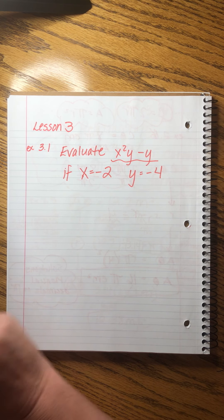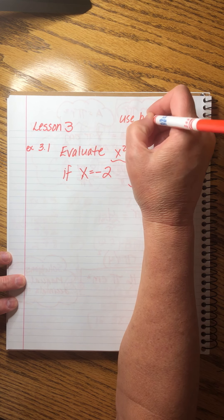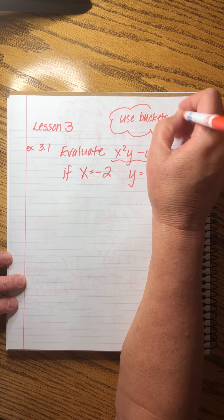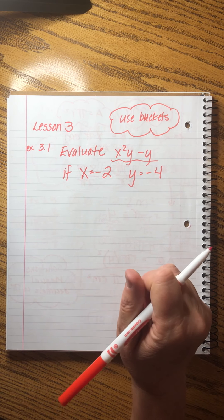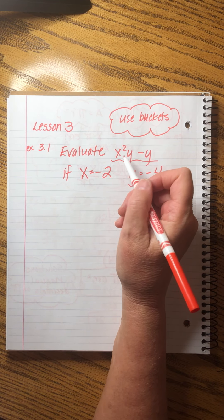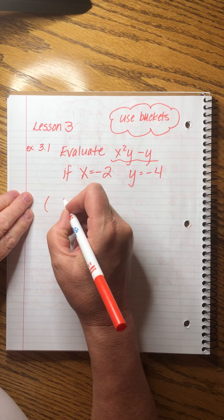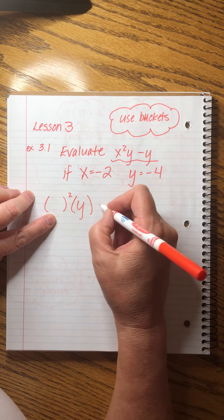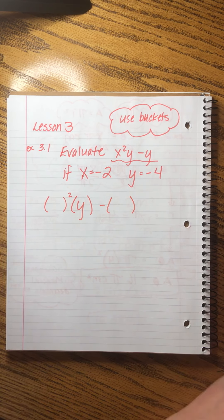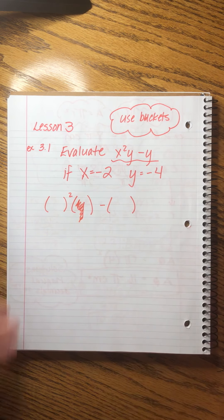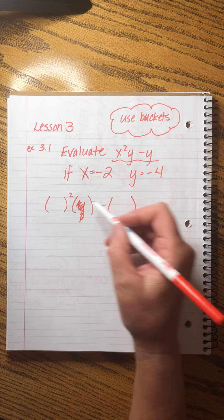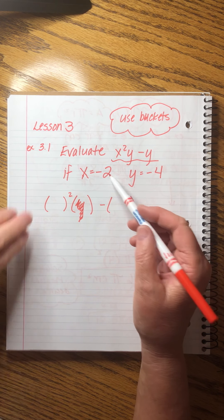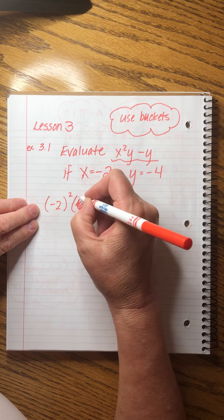The most important thing to remember is to use buckets. The reason we want to use buckets is because it's super easy, if you don't, to mess up signs and to get confused about what's going on between the numbers. So we look at the original expression and we copy it, putting in buckets for every letter. So there's the x squared, and then we're going to multiply it by y, and then we're going to subtract y. All right, I'm just going to scribble that out. My bad.